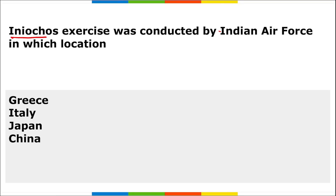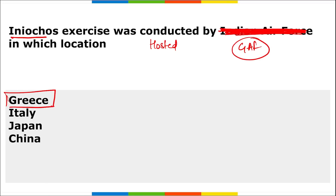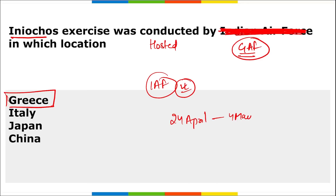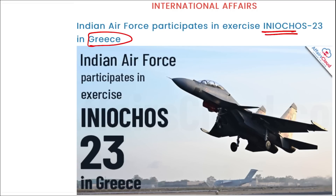The Innocus exercise was hosted by the Greece Air Force — not Indian Air Force. The location is Greece. Indian Air Force participated in this exercise, which was held between 24th April and 4th May. From the Indian Air Force, the Sukhoi 30 MKI fighter jet took part in this exercise.